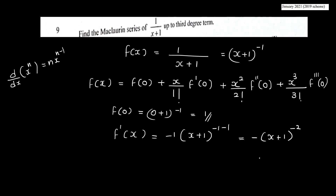So we have to find F'(x), the derivative. F'(x) equals minus 1 times (x+1) raised to minus 2. So F'(0) equals minus 1 times (0+1) raised to minus 2, which equals minus 1.